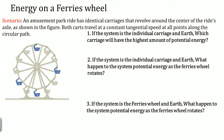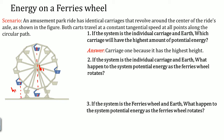Next, we're going to talk about energy on a Ferris wheel. An amusement park ride has identical carriages that revolve around the center of the ride. Both cars travel at constant tangential speed at any point along the circular path. If the system is the individual cart and Earth, carriage one has the highest potential energy because it has the greatest height H1. Ranking from highest to lowest potential energy: cart one, cart two, cart four, then cart three.